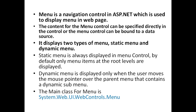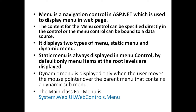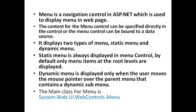It displays two types of menu: static menu and dynamic menu. Static menu is always displayed in the menu control. By default, only menu items at the root levels are displayed. Dynamic menu is displayed only when the user moves the mouse pointer over the parent menu that contains a dynamic submenu.